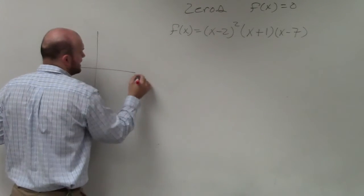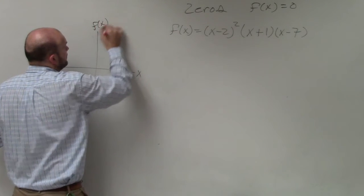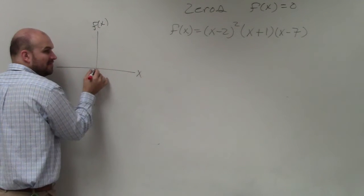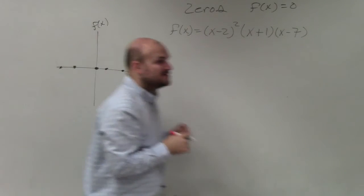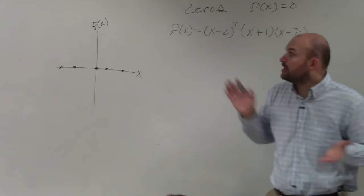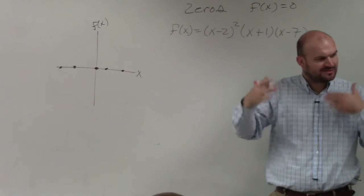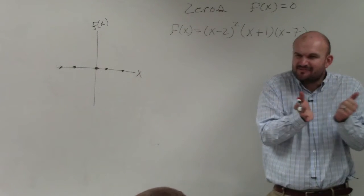If you were to look at a graph, when f of x is equal to 0, that is on what axis? The x-axis. So basically what we're looking for is the x-intercepts. I'll explain why this multiplicity and all this stuff is important.